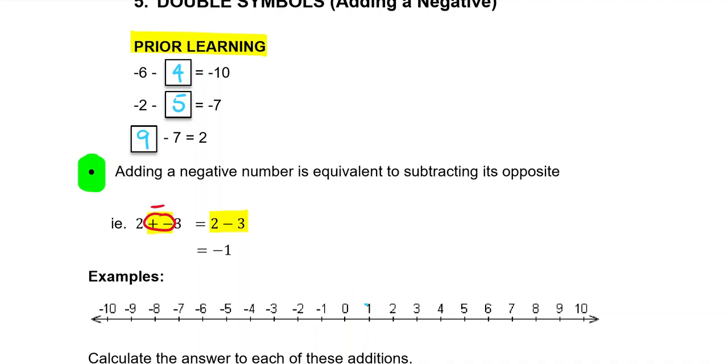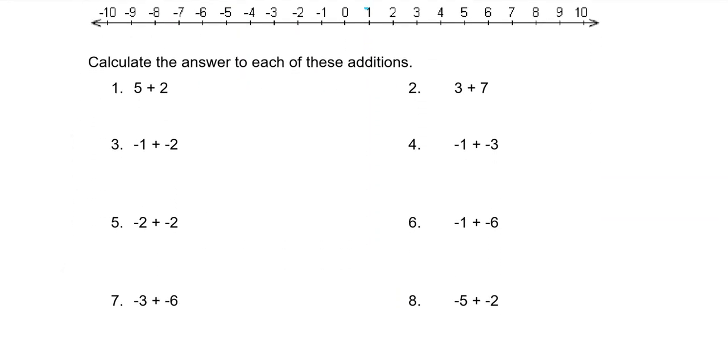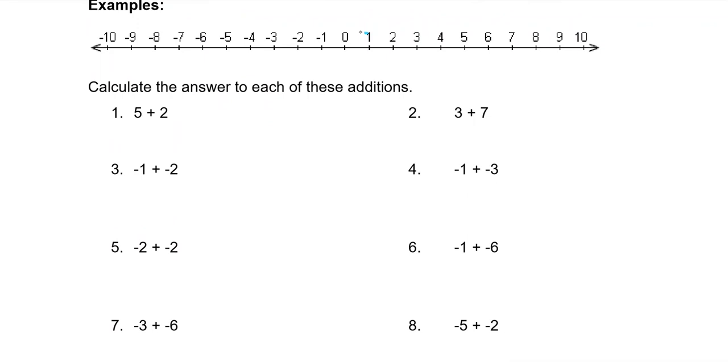Okay, let's do a few more of those questions down here. The first couple I'm pretty sure we don't need our number line for, but we're doing 5 plus 2 which is equal to 7, just normal addition. Question 2: 3 plus 7 makes 10.